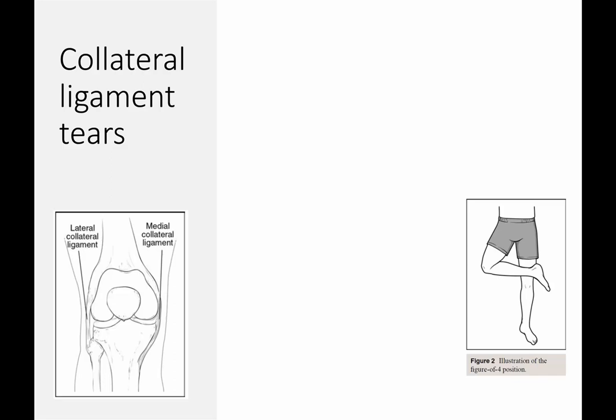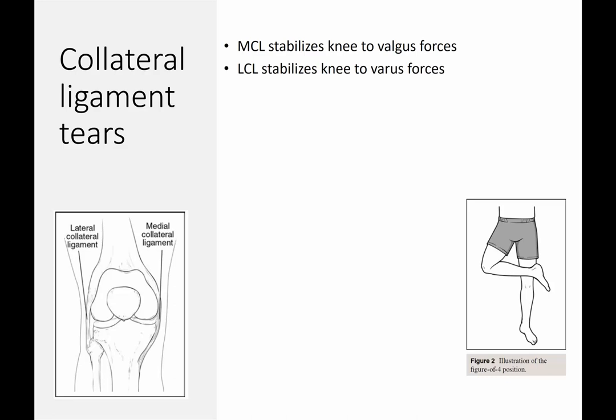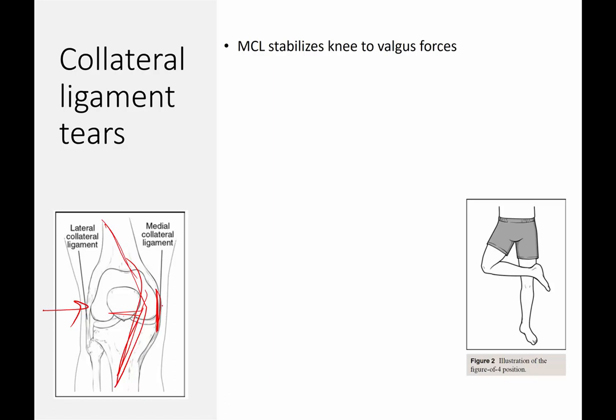On to collateral ligament tears. The collateral ligaments include the medial collateral and lateral collateral ligaments — these images are from your textbook, AAOS Essentials. The MCL stabilizes the knee to valgus forces, preventing the knee from buckling inward. If you didn't have the MCL, the knee could potentially buckle into valgus, and when you do the valgus stress test, there would be a large opening on that side.